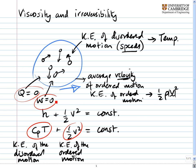And you can also see why if the velocity of the ordered motion goes down, the half v squared term reduces, then the temperature goes up, which is something that you'll see, or you will have seen, in thermodynamics.